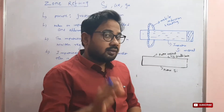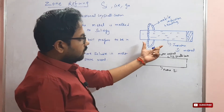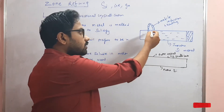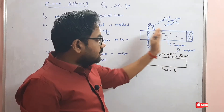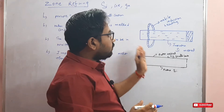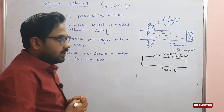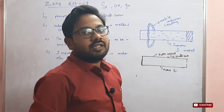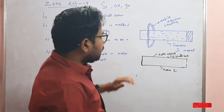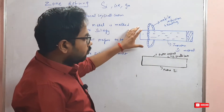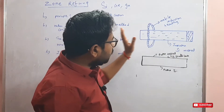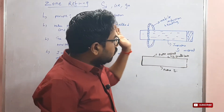Let's look at an example diagram. This metal is impure silicon metal. A movable induction heating coil is placed at one end of the metal bar. The movable induction heating moves along the bar.